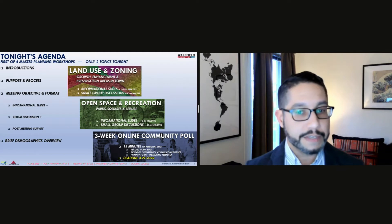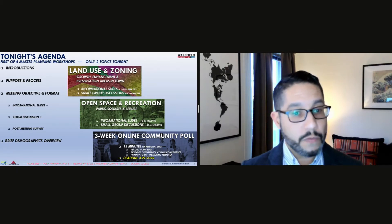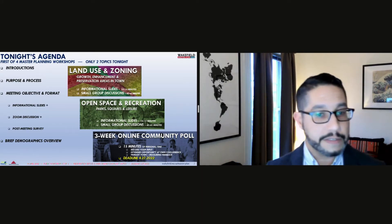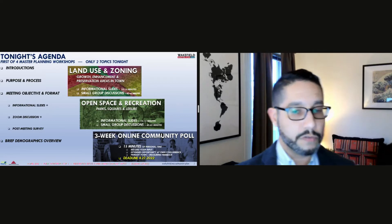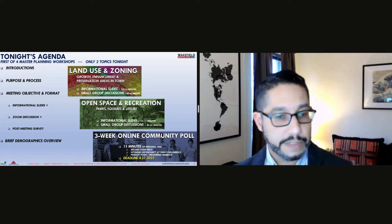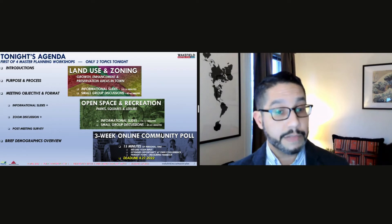After some brief introductions, we'll cover the purpose and process, the meeting objective, the format, and some brief demographics. We'll discuss our first topic: land use and zoning — how to influence different areas in town for growth, enhancements, and preservation. Our second topic will be open space and recreation, exploring ideas for parks, squares, and leisure opportunities. After the meeting, we strongly suggest Wakefield community members take the online survey on these two topics to gather feedback and measure consensus ideas.